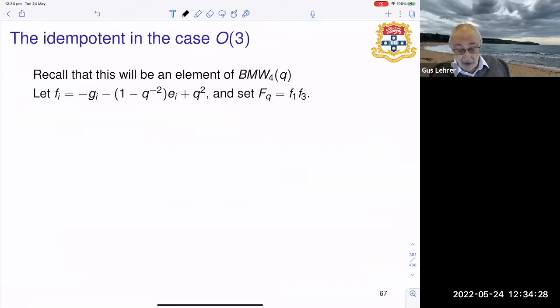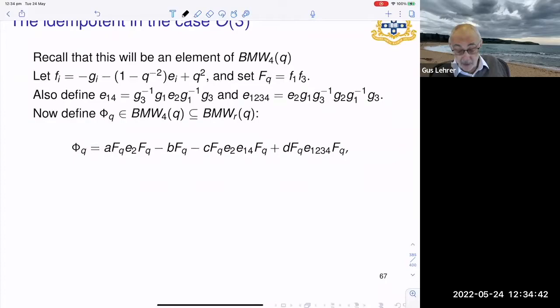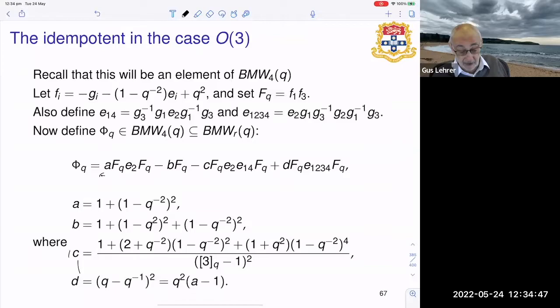In the symplectic case there's a canonical choice. In the orthogonal case an explicit one is known only for the case m equals 3, and it's pretty complicated. I'll show it to you. This is going to be an element in BMW_4 of q. I don't think we've got time to digest it properly, but this is the formula. That's what phi_q is, and these are just the coefficients a, b, c, and d. There's a certain structure to this formula. I will circulate this, and it exists in papers of mine with Ruben. So this is not hard to find. No other explicit formula is known in the quantum case for the generators of the kernel.